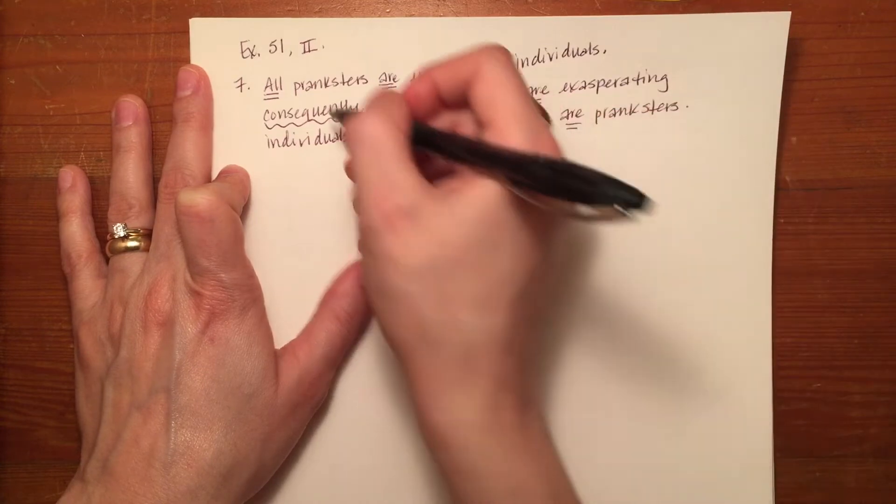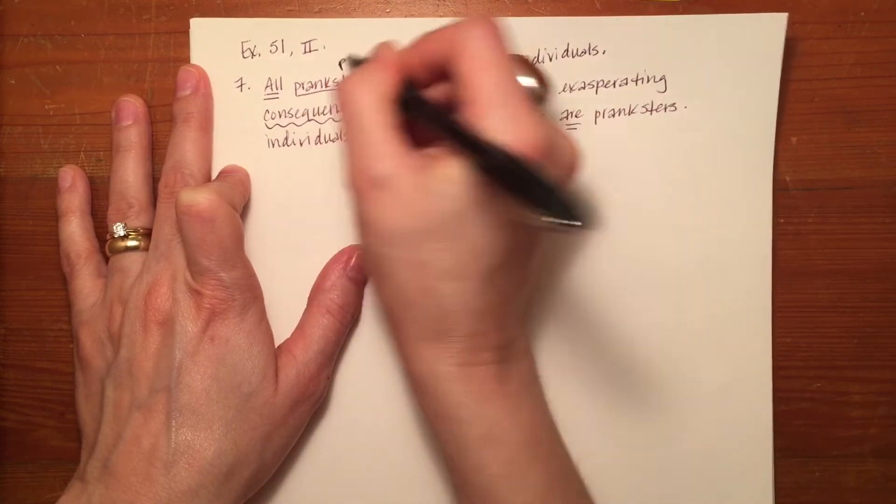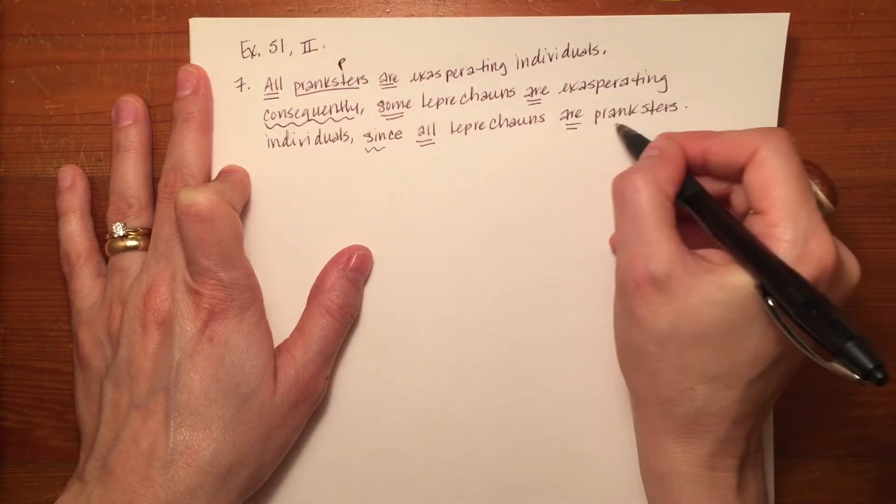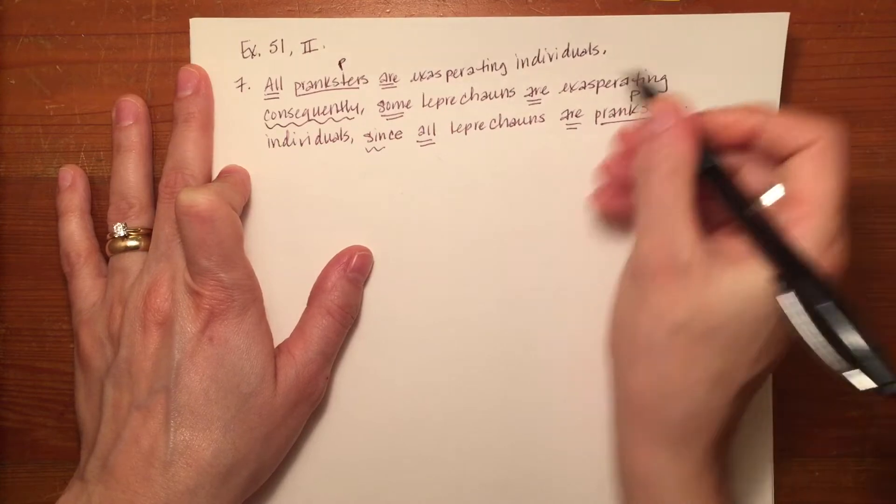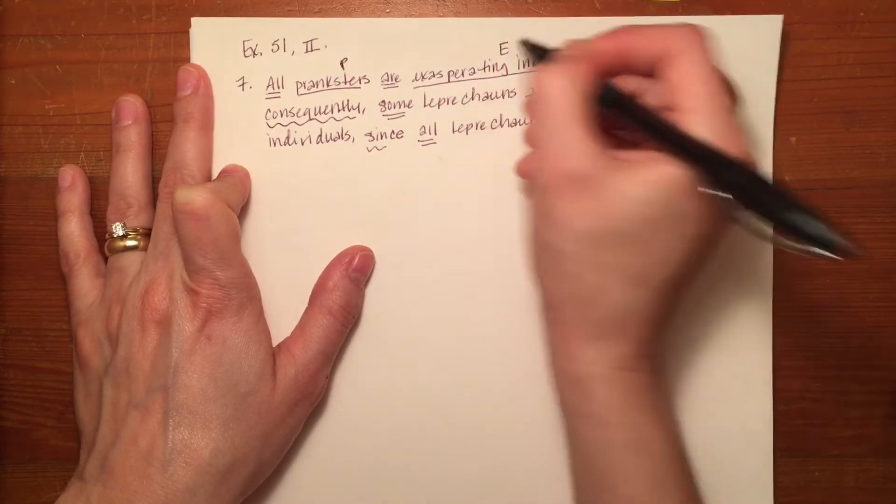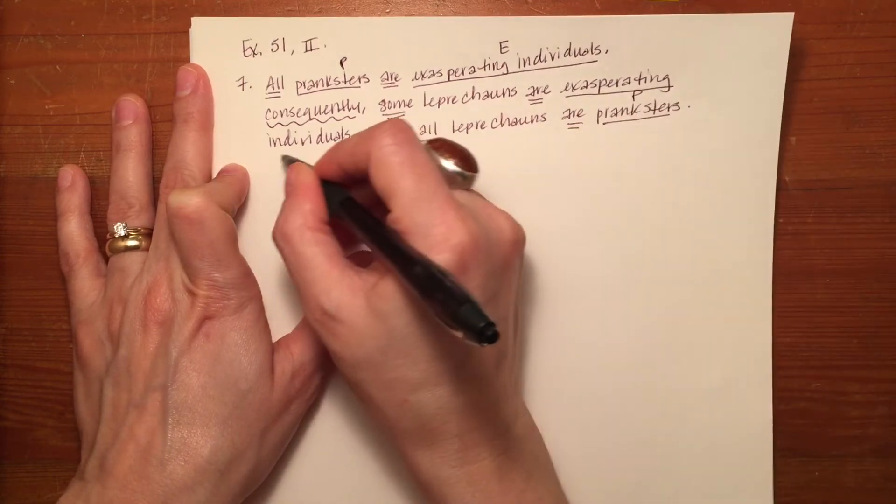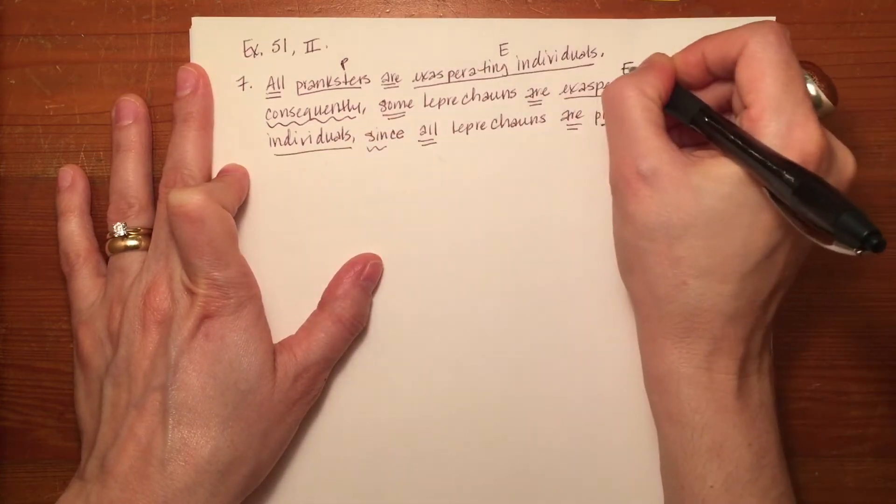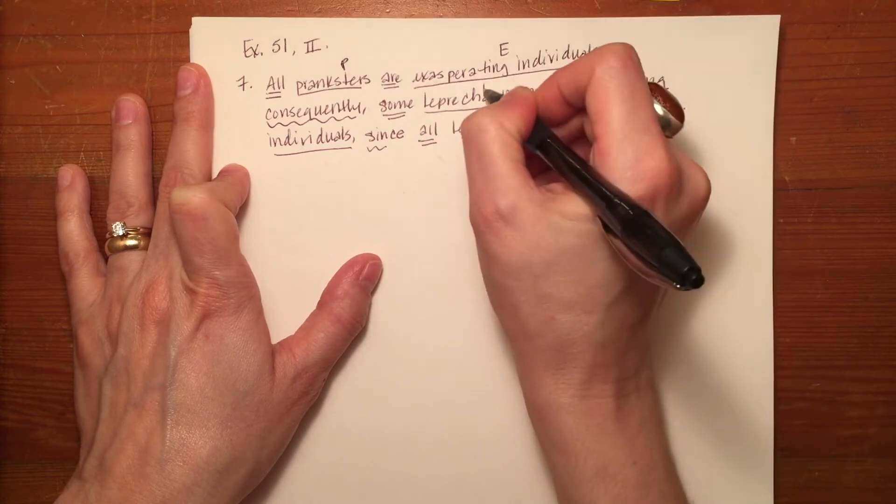And again, the terms are doubled, so if I've got pranksters here, it's going to be somewhere else in the argument. Exasperating individuals, I'll use E. And then for leprechauns, I'll use L.